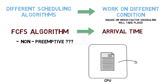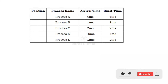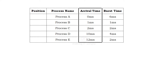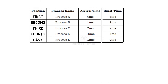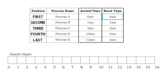Let us understand how FCFS works with an example. There are five processes: A, B, C, D, and E. These are the arrival times for each process — process A arrived in the ready queue at 0ms and is first, process E arrived at 12ms and is last. This column is the burst time — the actual CPU time required. For example, process A needs 6 milliseconds of CPU execution to complete. Using a Gantt chart, let's see how FCFS schedules these.